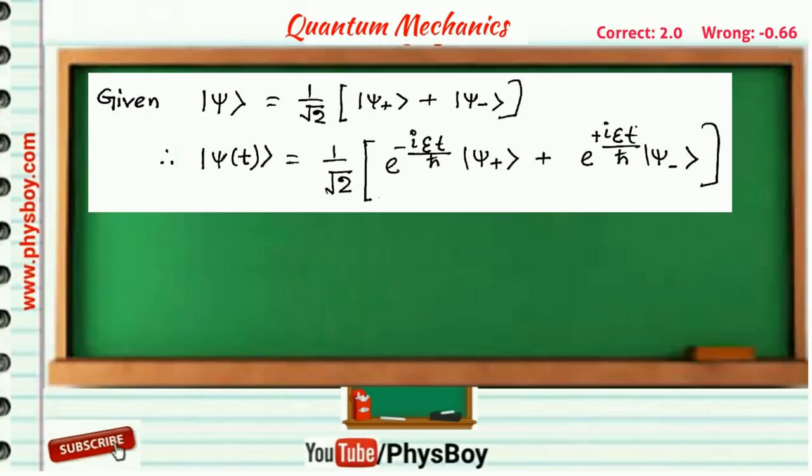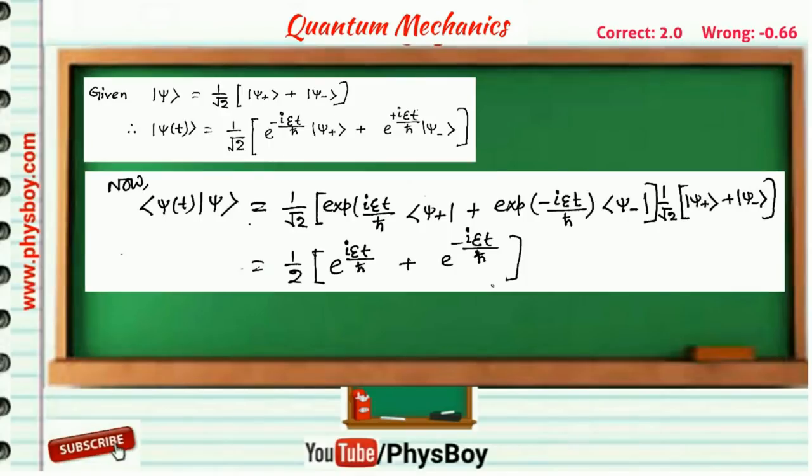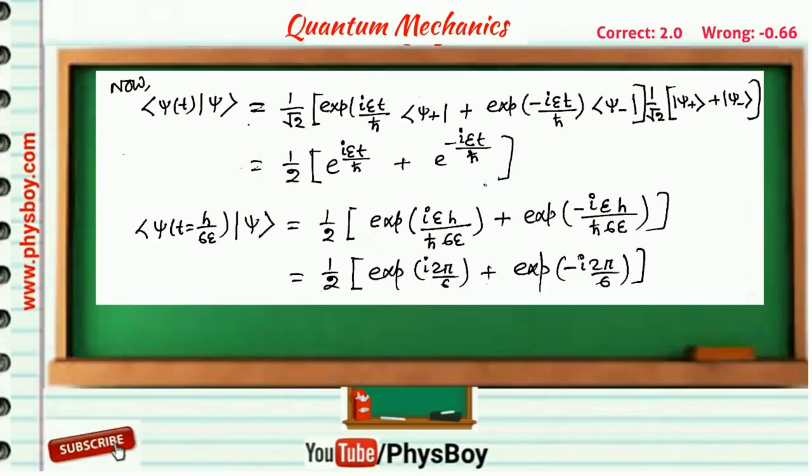The product will look like this. Now if you put t = ℏ/(6ε), then the product becomes this. By simplifying this...